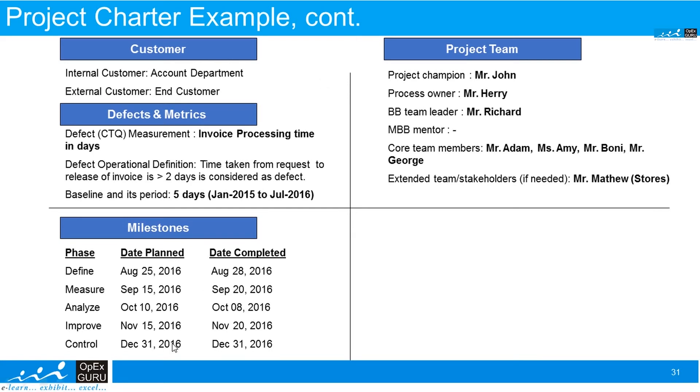Approval: project leader, champion, steering committee, and financial representative. So this is how all these eight elements of a project can be used to create a project charter.